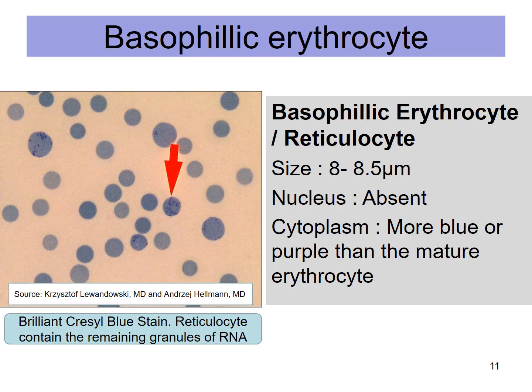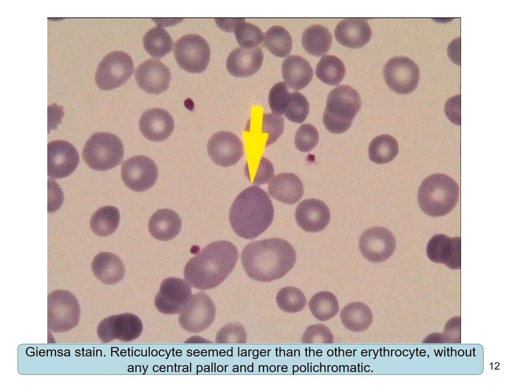Next is the basophilic erythrocyte, or what we usually call the reticulocyte. It has no nucleus and the cytoplasm is blue or purple. In Giemsa stain, the reticulocyte appears larger than the other erythrocytes, without any central pallor, and is more polychromatic.